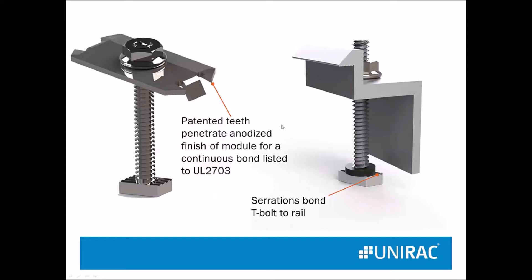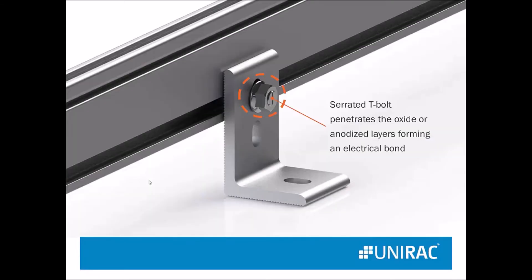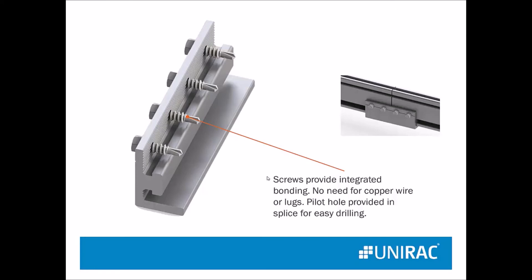With our solar mount product, the fangs or teeth create the bond between the two modules, and the serrations create the bond with the racking, so that UL 2703 shows everything is bonded together. Our L-feet are even bonded with a serrated T-bolt that bonds the L-foot into the racking and the whole system. And our splices are now self-bonding — no need to jumper across the splice, because if these are torqued properly, the bond is carried from this rail through the splice to that rail.